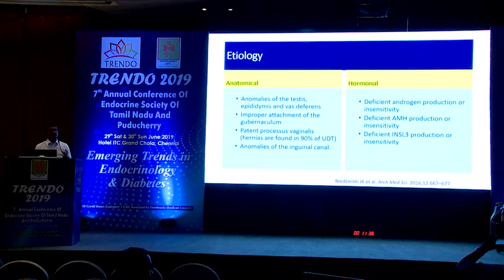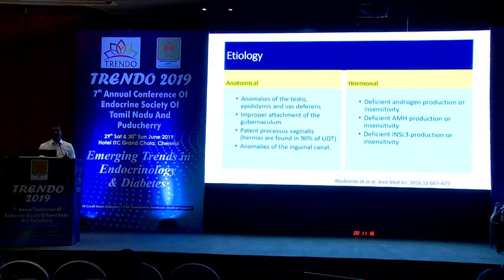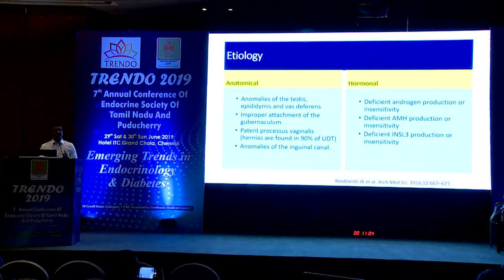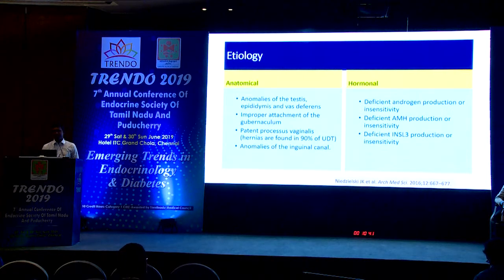Common causes of undescended testis include anatomical anomalies of the testis, epididymis, vas deferens, or improper attachment of the gubernaculum, and associated patent processus vaginalis. Nearly 90% of patients with undescended testis have associated inguinal hernias. More relevant to endocrinologists are hormonal causes: deficient androgen production or androgen resistance can lead to undescended testis. Deficient AMH production and insensitivity — as seen in persistent Müllerian duct syndrome — as well as deficient or resistant insulin-like factor 3, can also cause undescended testis.